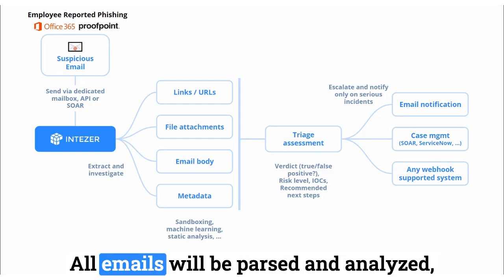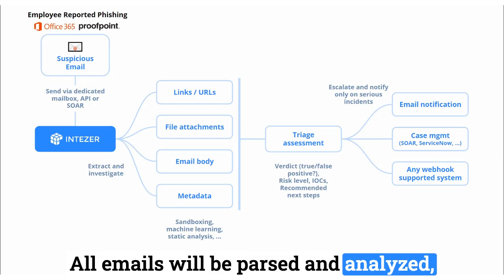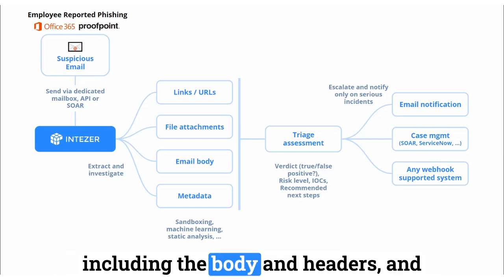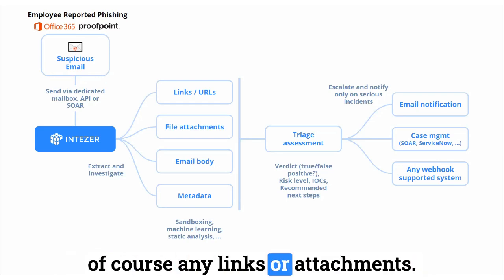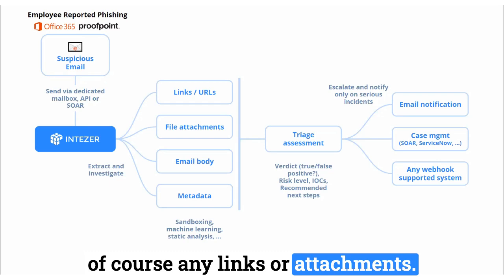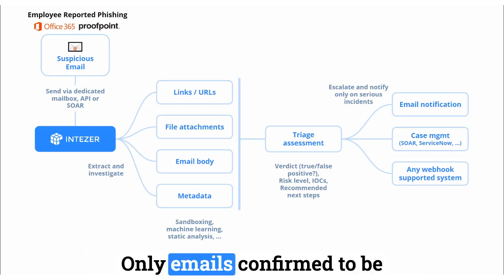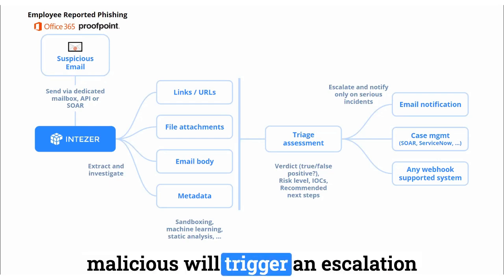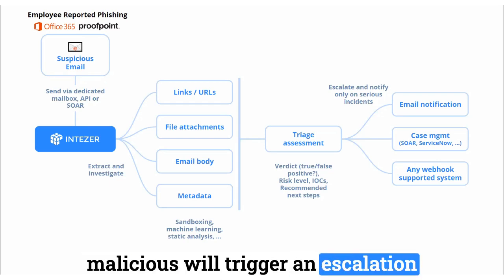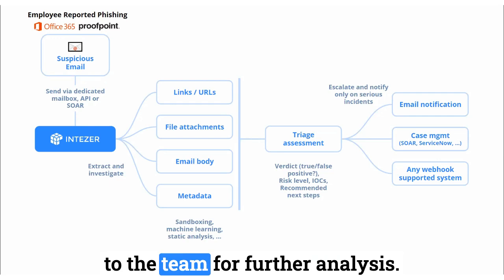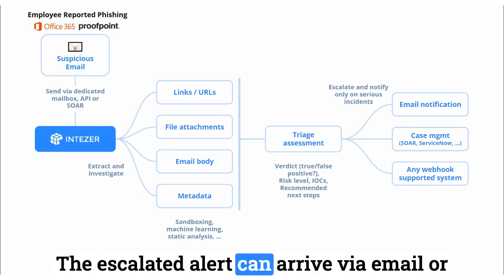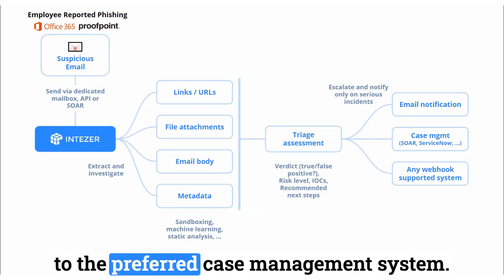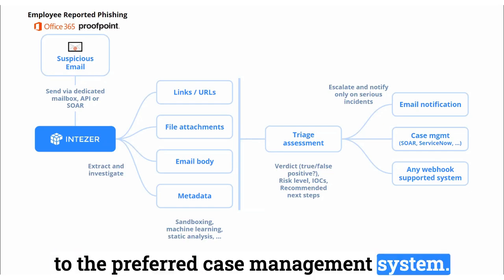All emails will be parsed and analyzed, including the body and headers, and of course any links or attachments. Only emails confirmed to be malicious will trigger an escalation to the team for further analysis. The escalated alert can arrive via email or to the preferred case management system.